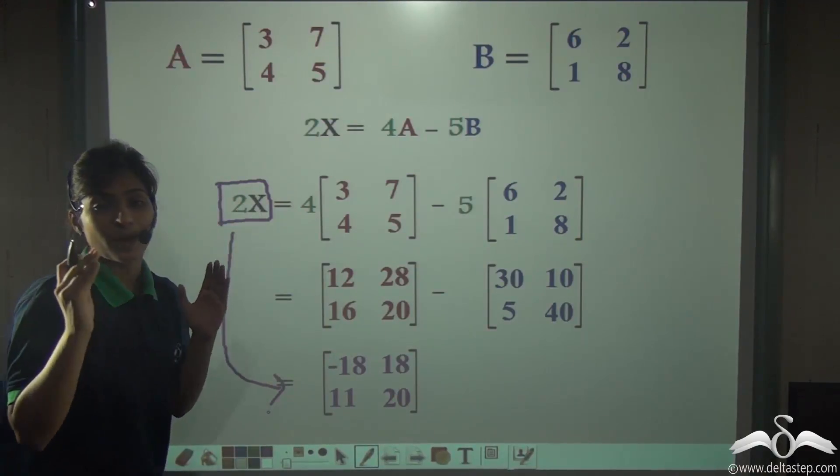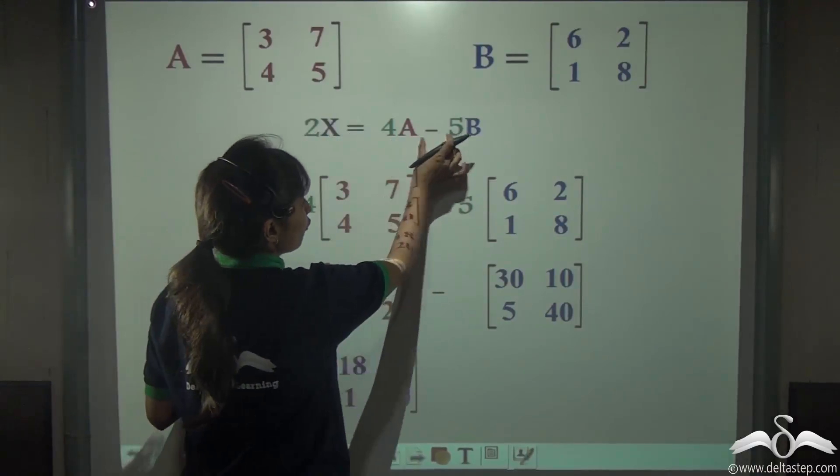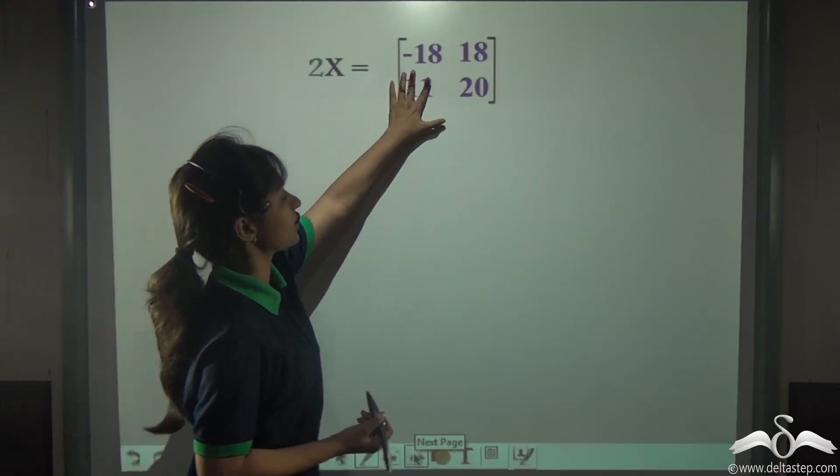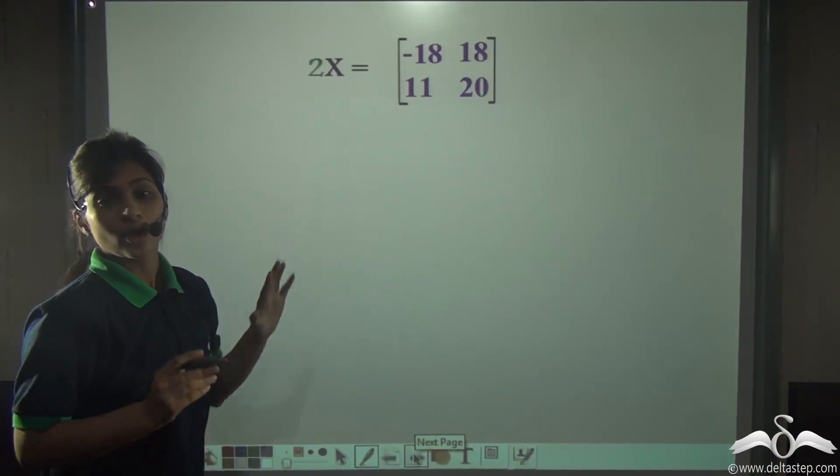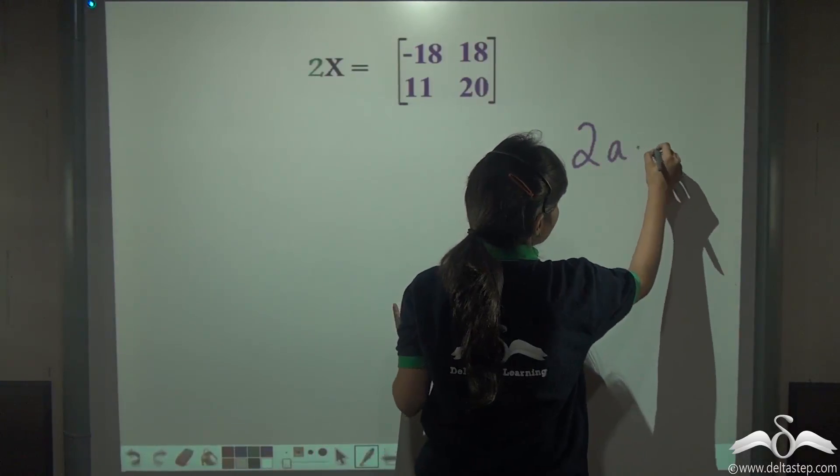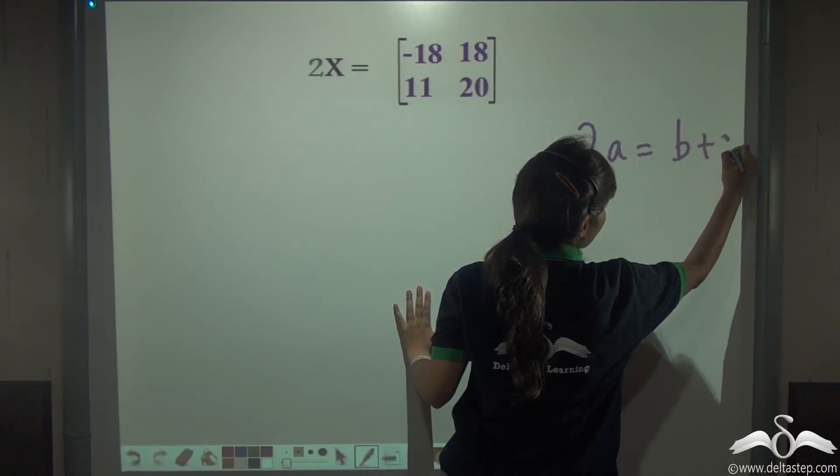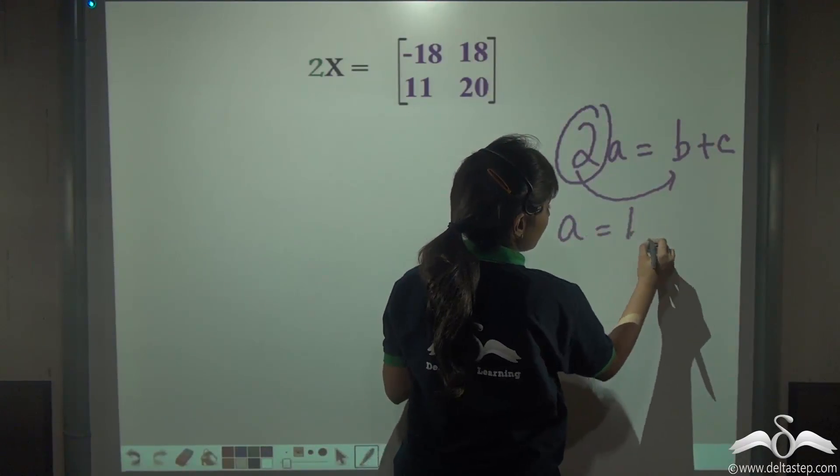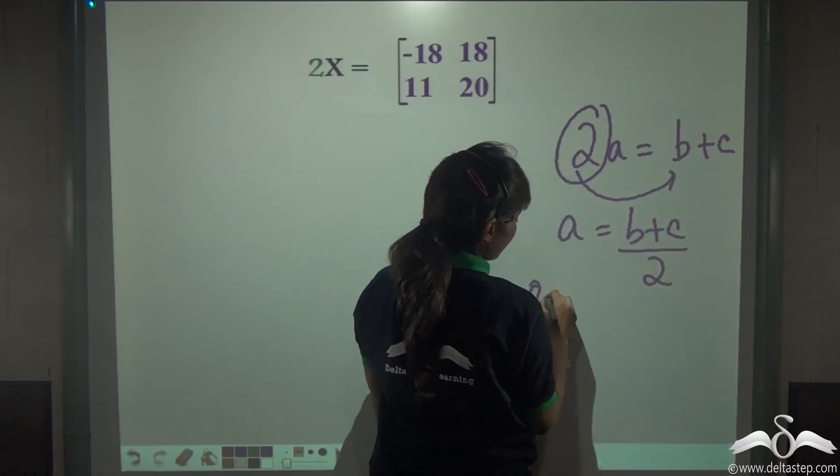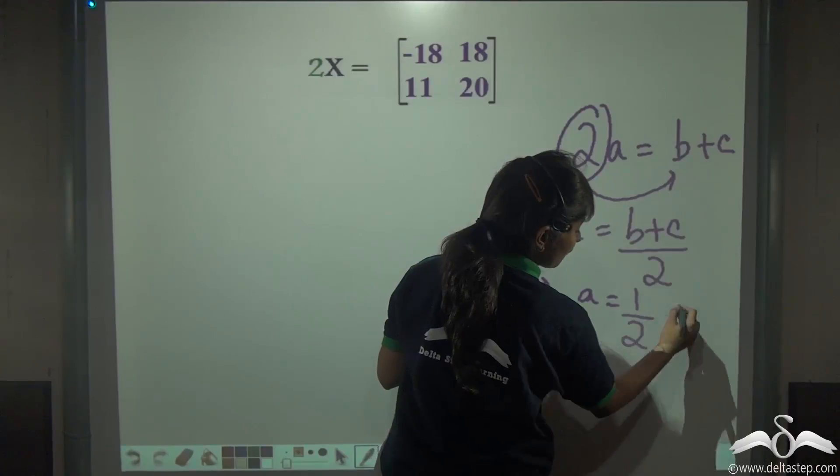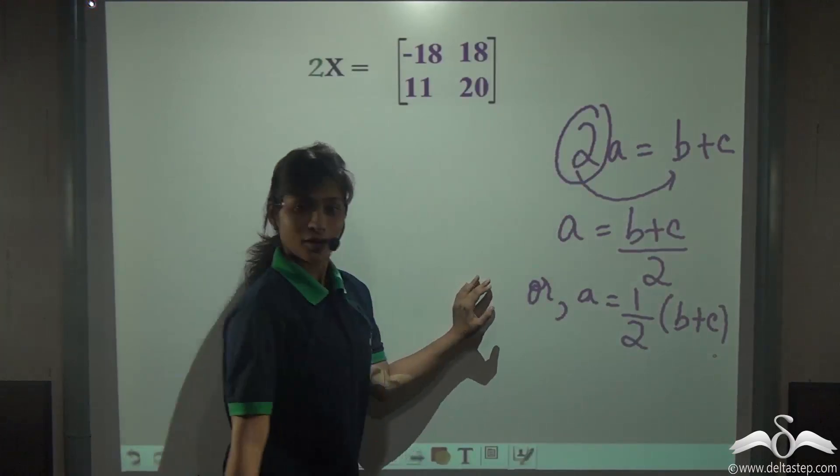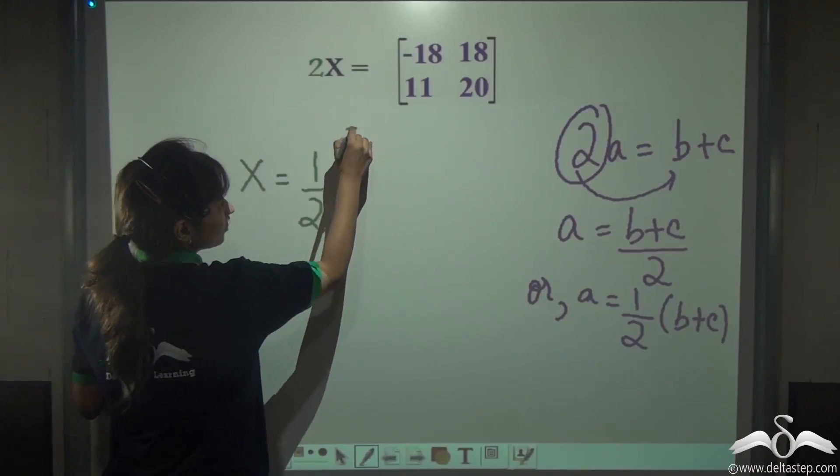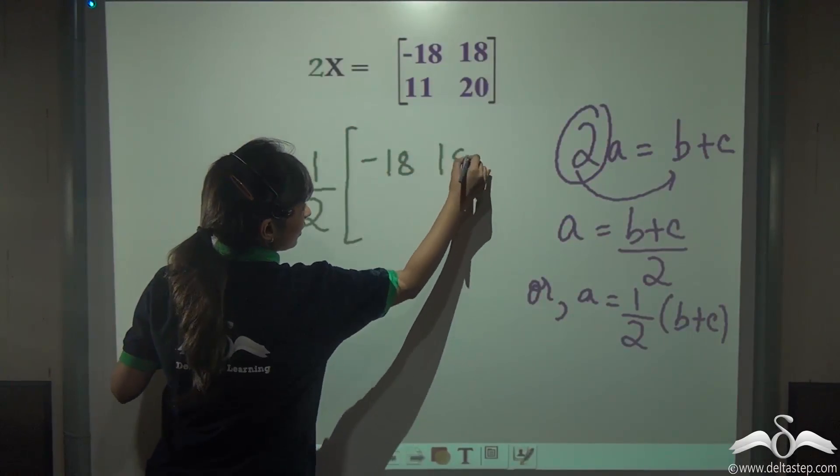What is our job? We have to find the matrix X such that 2X is equal to 4A minus 5B. Normally, if we have been given 2A is equal to B plus C and I have to find out A, what do I do? I take this numeric coefficient to this side. So this becomes B plus C by 2, or A is equal to half of B plus C. Same thing we will do here. X will be equal to half of [-18, 18, 11, 20].